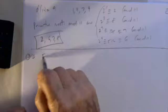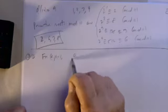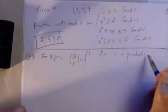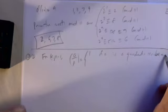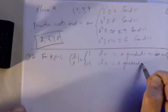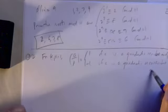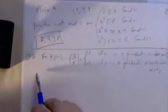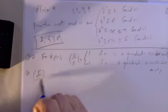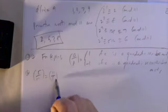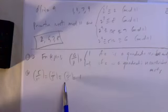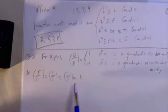The Legendre symbol: if a and p are relatively prime, (a/p)=1 if a is a quadratic residue mod p, and −1 if a is a quadratic non-residue mod p. For example, (5/11): since 5≡1 mod 4, we can flip to get (11/5). Now 11≡1 mod 5, and 1 is certainly a quadratic residue since 1²≡1. So (5/11)=(11/5)=1.